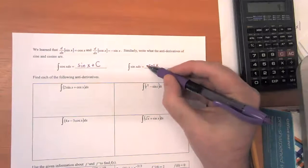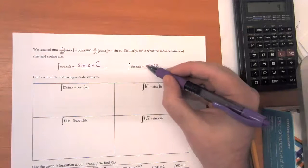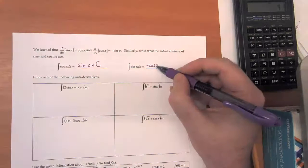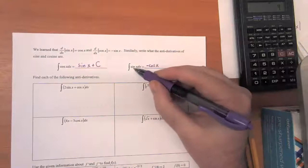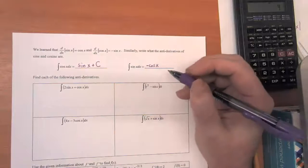So let's think about that. The derivative of negative cosine of x would be negative negative sine. Those two negatives cancel out and that gives us the positive sine of x.